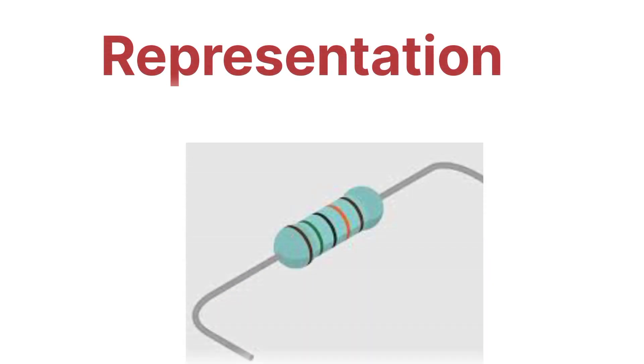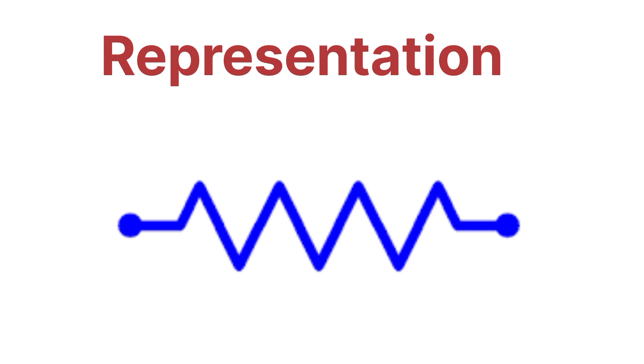Now let's talk about the representation of resistance — how we can represent it. Resistance is represented like a zigzag path, which shows the opposition to the flow of current. In the image you can see that the zigzag line is showing the opposition offered to the flow of electric current in a circuit. So the representation of resistance is like a zigzag path.